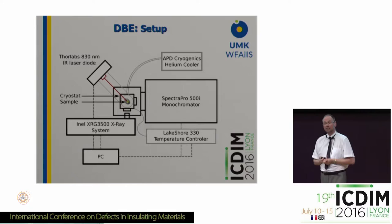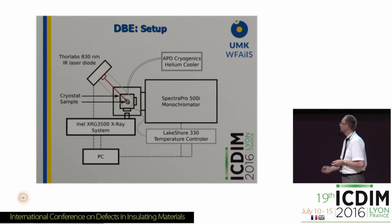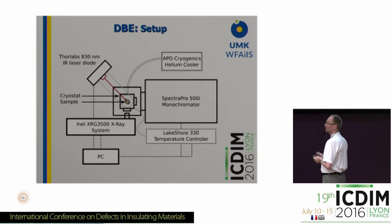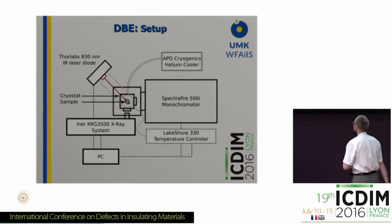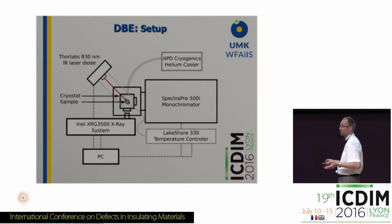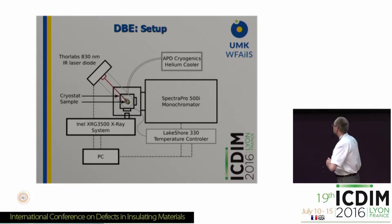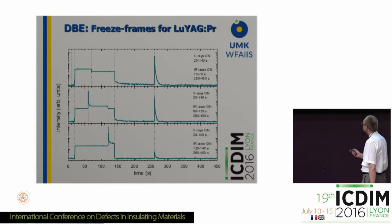Now let's go to the second part. We have constructed a setup that enables us to study the crystals under double beam excitation. The sample is kept in a cryostat and can be cooled down to 10 K. We are capable of irradiating the samples simultaneously with X-rays from an internal system and with infrared radiation provided by a laser diode. There is also a monochromator in this system, but in the experiments I will show, the monochromator is set to zeroth order, so we look at the total emission, which is not wavelength resolved.